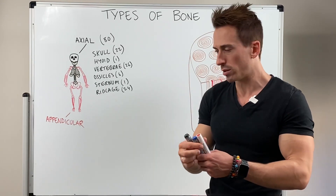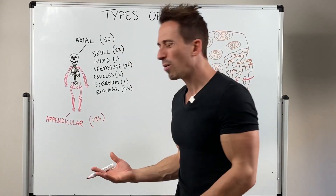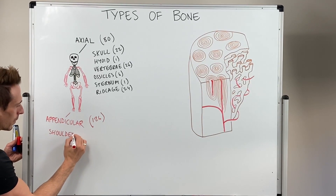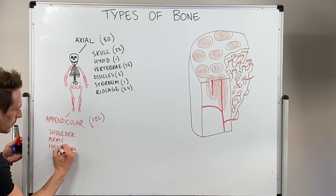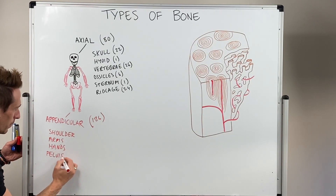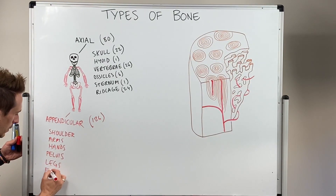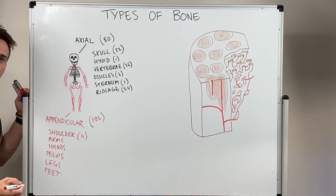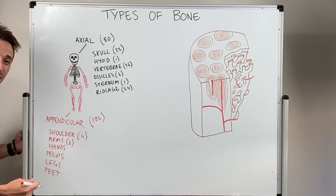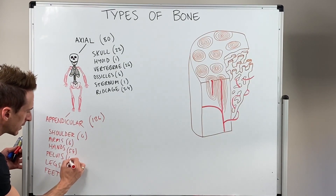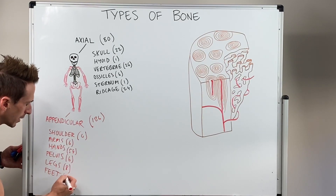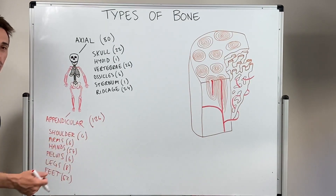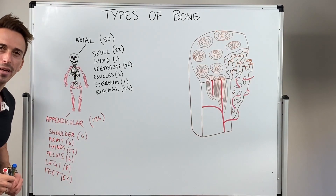That leaves us 126 bones for the appendicular skeleton. The appendicular skeleton is basically the shoulder girdle (4 bones), the arms (6 bones), the hands (54 bones — a lot of bones for the hands and wrists), the pelvic girdle (6 bones), the legs (8 bones — don't forget the patella), and the feet (52 bones). Adding these up equals 126 bones. That is one way of dividing the bones up into axial and appendicular.